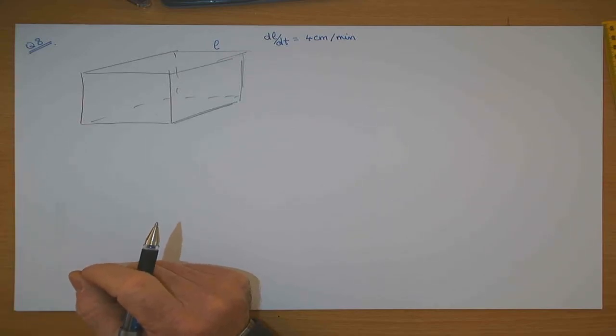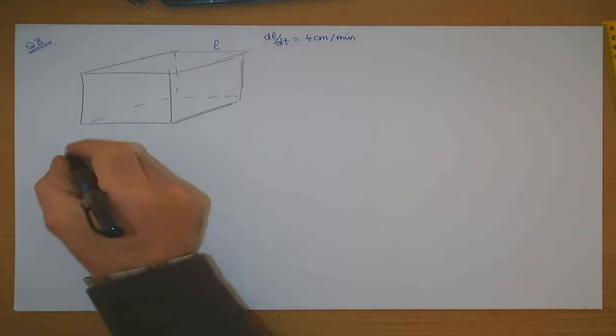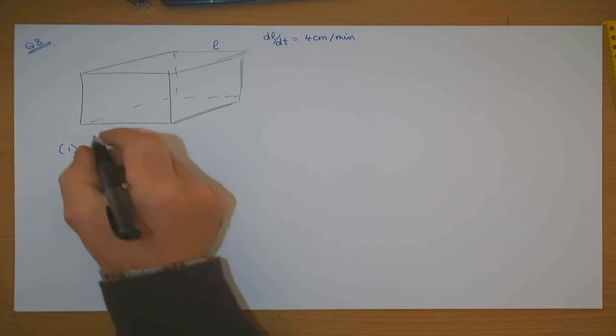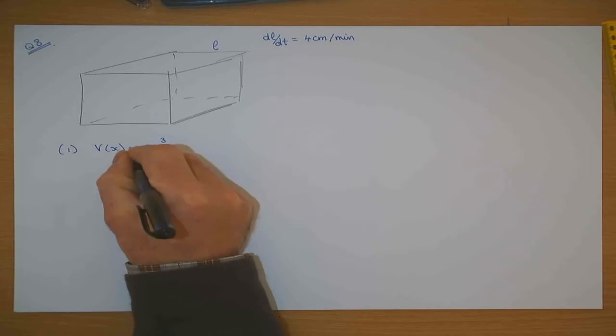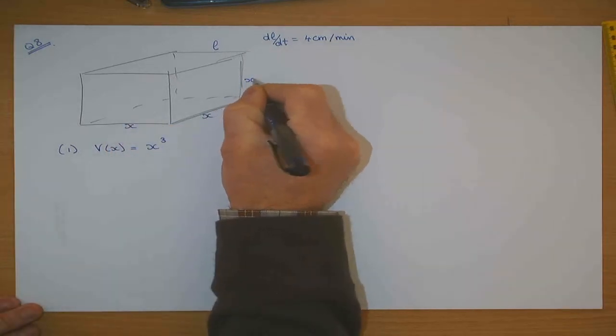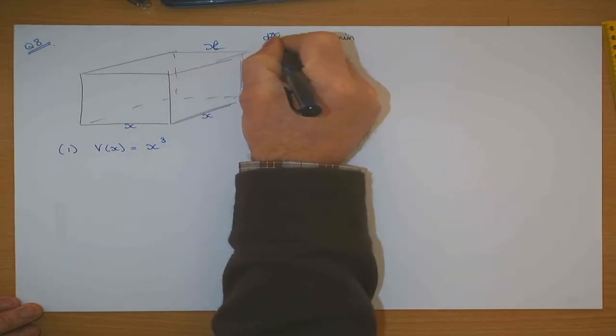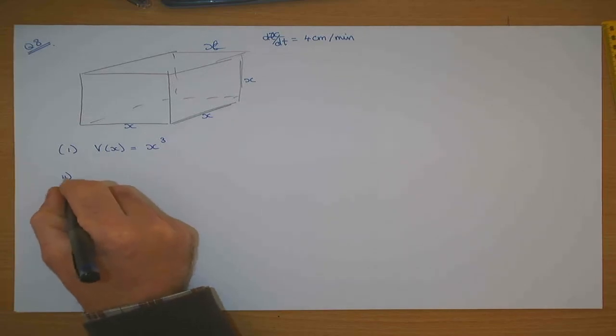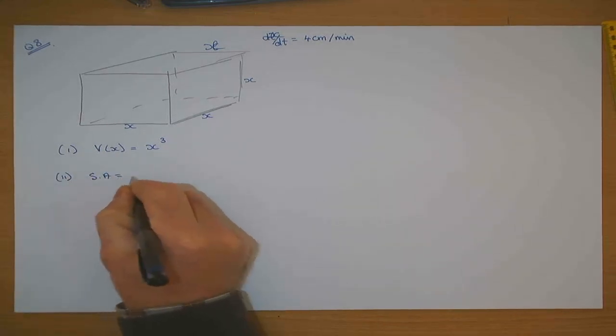The volume of the cube V is given by V = x³, where x is the edge length, because it's x by x by x. The surface area of the cube is 6x² - each side is x by x, which is x², and there are 6 of them.